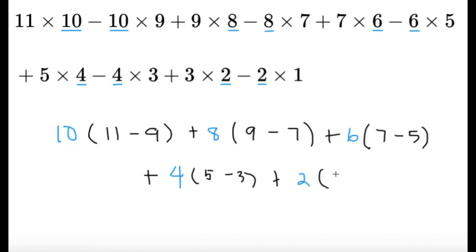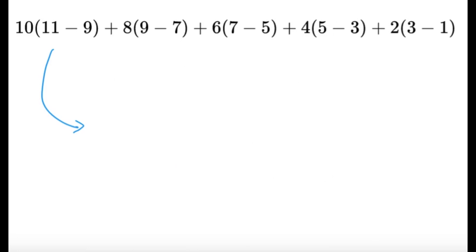Now, after we do this factoring, all of a sudden we can see that we've simplified the sum. Because all we have to do is compute 10 times 11 minus 9, plus 8 times 9 minus 7, plus 6 times 7 minus 5, plus 4 times 5 minus 3, plus 2 times 3 minus 1. And this is a little bit more simple now.